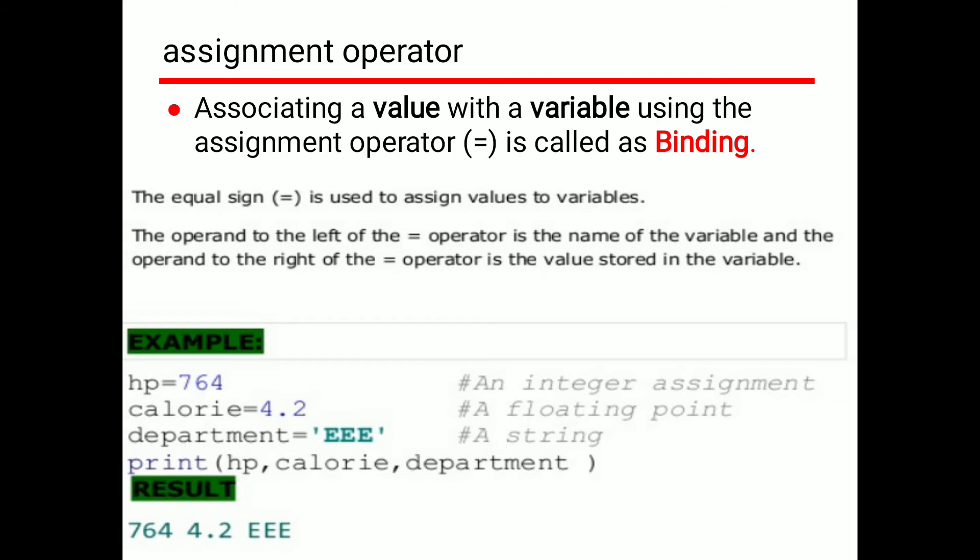The assignment operator: assigning a value to a variable is called binding. We use the equal symbol (=) to assign values to variables. The operand to the left of the equal operator is the name of the variable, and the operand to the right is the value stored in the variable.